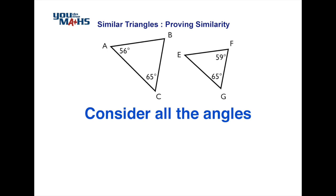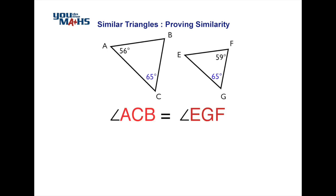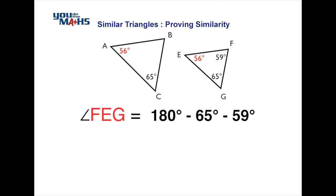We'll notice that 65 degrees is matching in both triangles — that occurs at angle ACB and angle EGF. The other angles don't match, so we need to do a calculation to find one of the missing angles. We'll find the angle at FEG by knowing there are 180 degrees in a triangle and subtracting the other two angles, giving us 56 degrees.